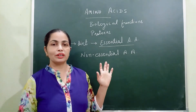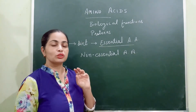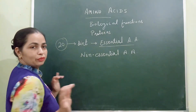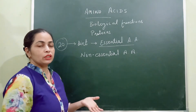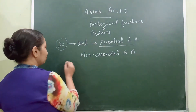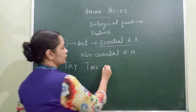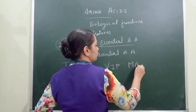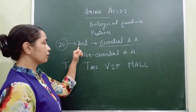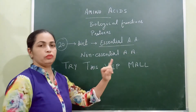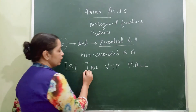This is an important and favorite question for MCQs and short answers — which are essential and which are non-essential — and it's always confusing. There is a simple mnemonic for that. We all like to visit malls these days, so let's use the VIP MALL mnemonic to remember the essential amino acids required to be taken through diet.